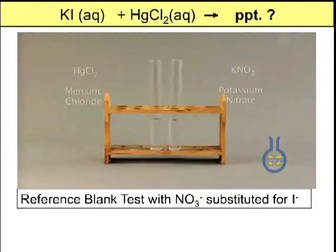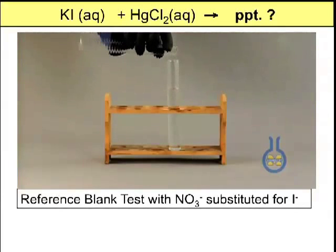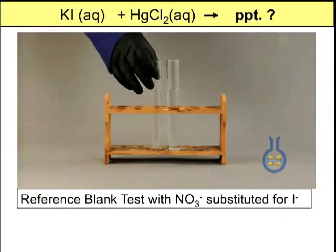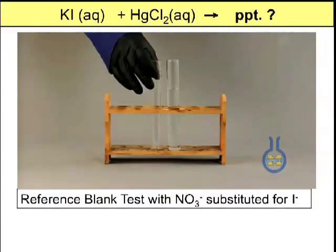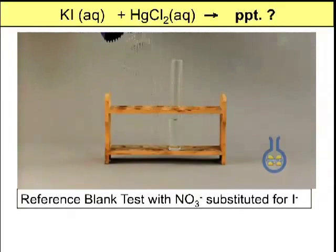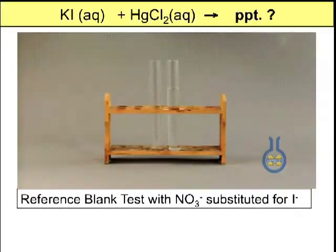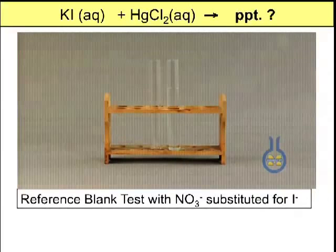Here we're going to take the reaction — stated at the top — and we're taking out the I minus and substituting nitrate. Notice they're both clear colorless samples. The original reaction listed at the top is potassium iodide. We're going to take out the iodide and put in the highly soluble nitrate. So the only thing missing is the I minus. We take the original samples with the I minus missing, put them together. We get no reaction.